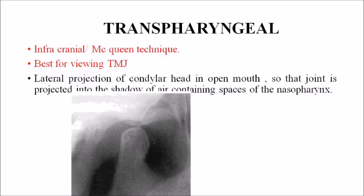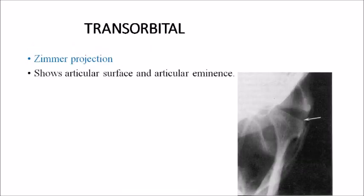Next is the transpharyngeal view. It is best for viewing the TMJ in the medial aspect, also known as the infracranial or McQueen technique. It is used to assess the medial aspect of the TMJ region — you can see the medial part of the condyle in this view.